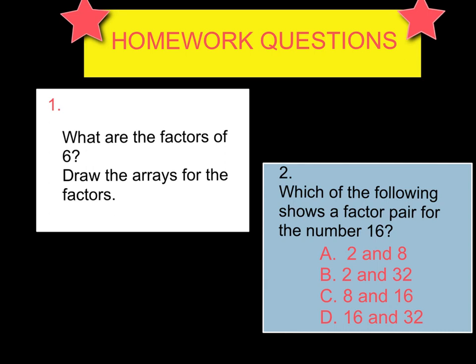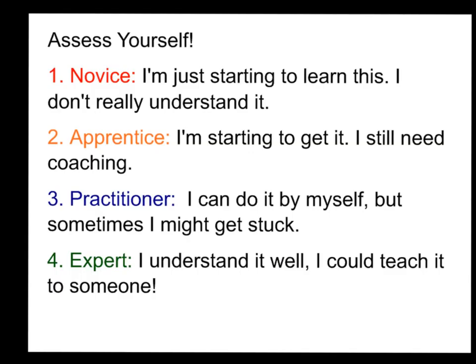Here are your homework questions for tonight, done on your graphing handout. Number 1 says: what are the factors of 6? You need to tell me the ways you can make 6, and then draw the arrays for the factors. Number 2 says: which of the following shows a factor pair for the number 16? Is it 2 times 8, 2 times 32, 8 times 16, or 16 and 32? Don't forget to assess yourself — let me know if you are a novice, apprentice, practitioner, or an expert, and write your level at the bottom of your paper. I will see you tomorrow in class for some fun activities. Bye!